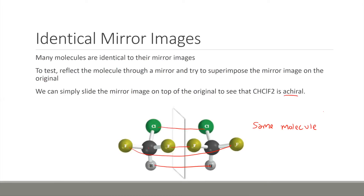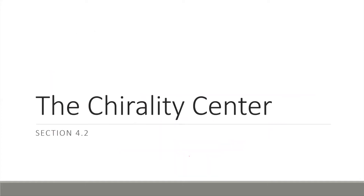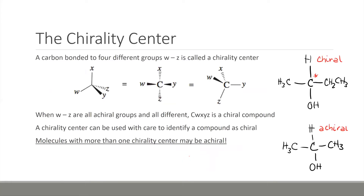Notice that in this molecule there are not four different things attached to the center, but instead only three. So how do we define a center of chirality in a molecule? A carbon bonded to four different groups — in our example, groups W through Z — is called a chirality center. When all of these groups are different, we can also call this a chiral compound.